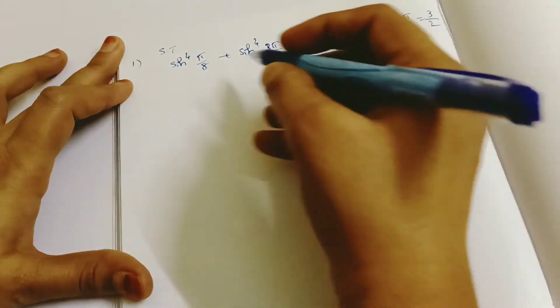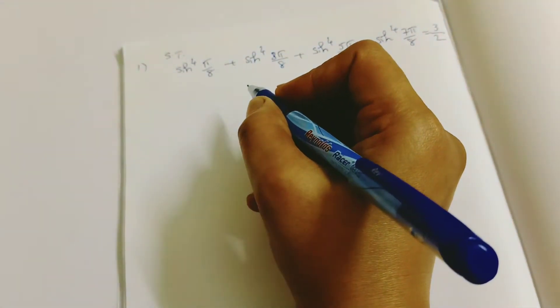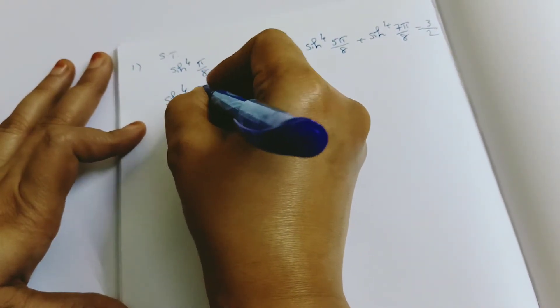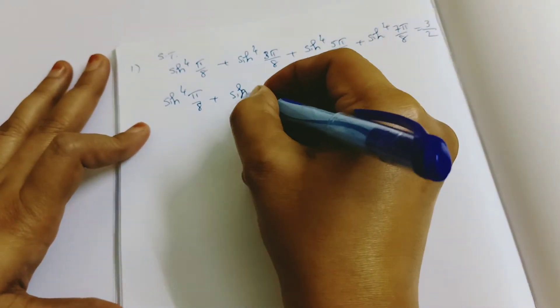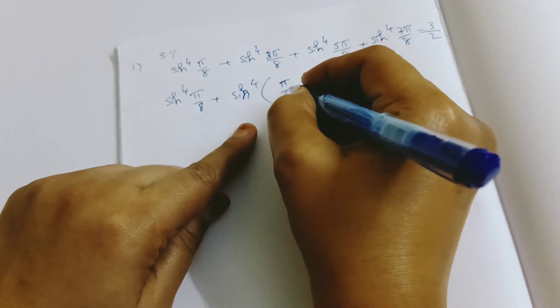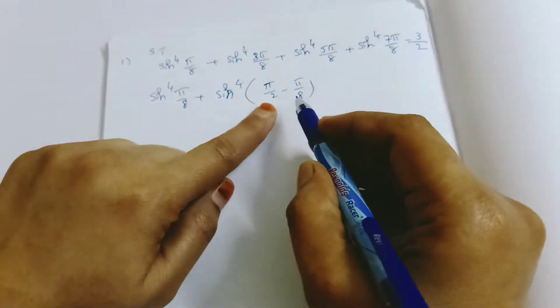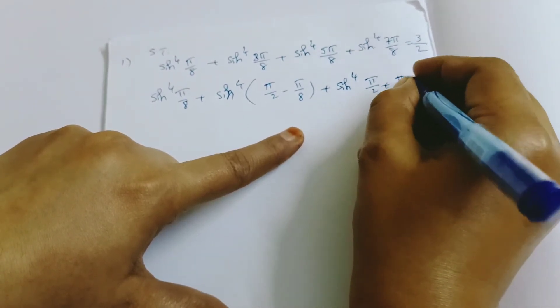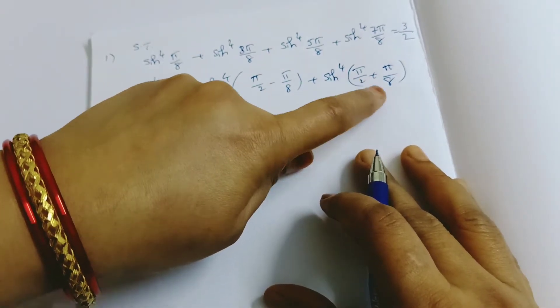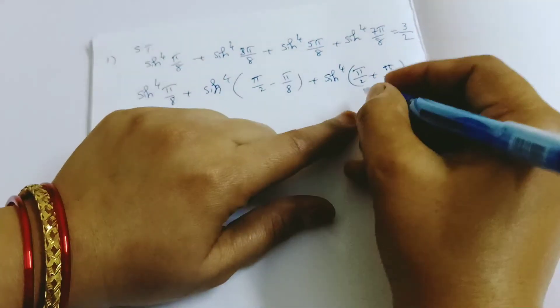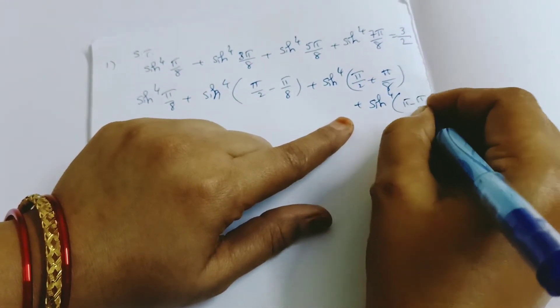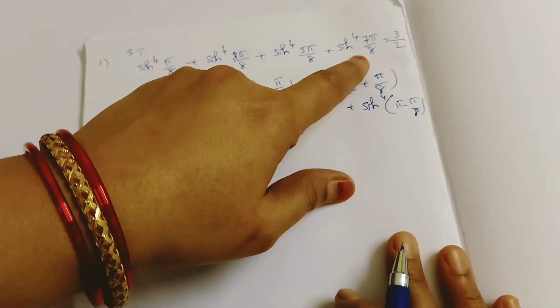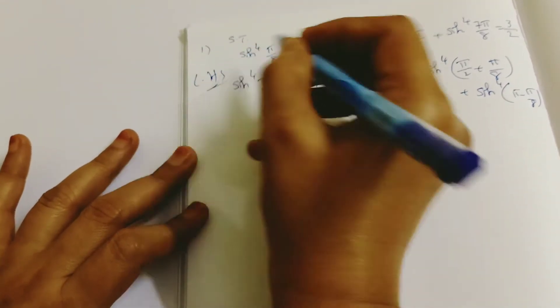Now, how to solve this type of question. Here all the functions are sin only. Then how to eliminate the sin function? I am taking LHS: sin⁴(π/8) + sin⁴(3π/8) + sin⁴(5π/8) + sin⁴(7π/8). So if you prove 3/2, that is RHS.